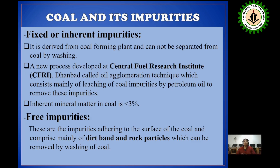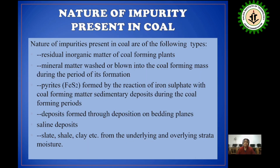Free impurities are the impurities adhering to the surface of coal and comprise mainly of dirt, band, and rock particles, which can be removed by washing of coal. So two types of impurities we have learned: one is fixed or inherent impurity, and another one is free impurity.